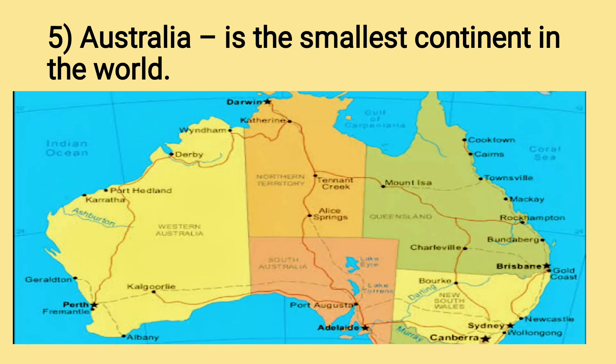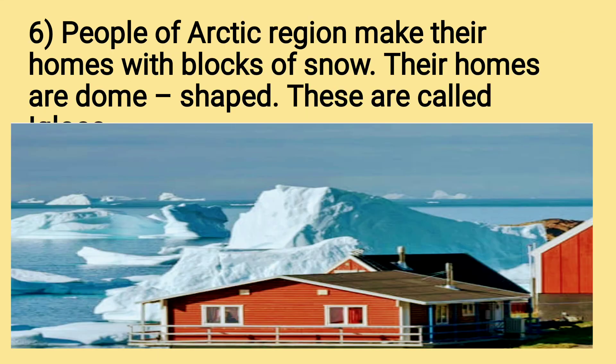This is a picture and map of Australia. Australia is the smallest continent in the world. The next — the people of the Arctic region make their homes with blocks of snow. Their homes are dome-shaped and these are called igloos.